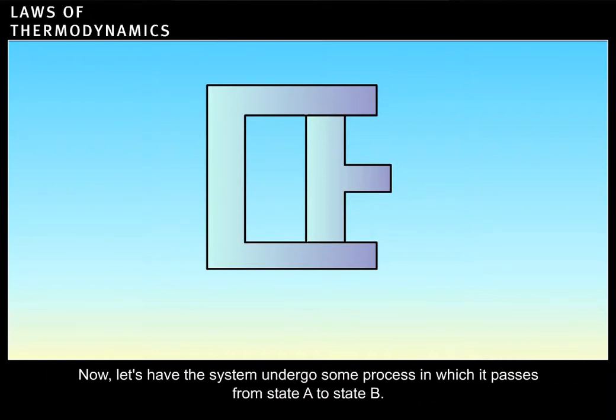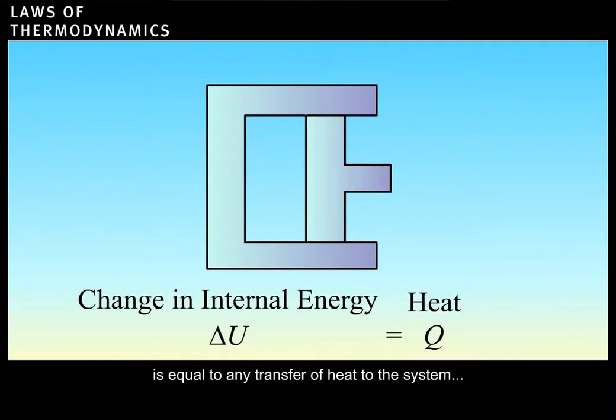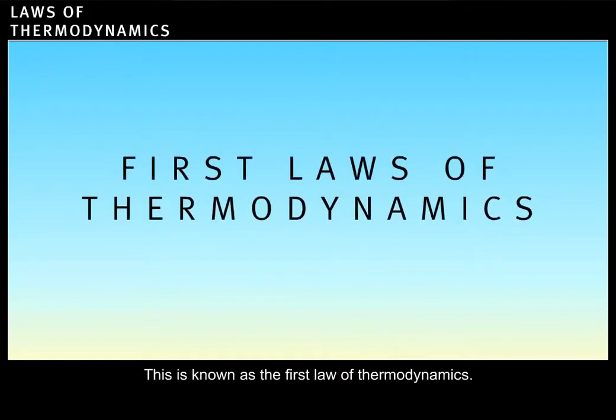Now, let's have the system undergo some process in which it passes from state A to state B. The change in the internal energy of the system, delta U, is equal to any transfer of heat to the system, plus any work performed on the system. This is known as the first law of thermodynamics.